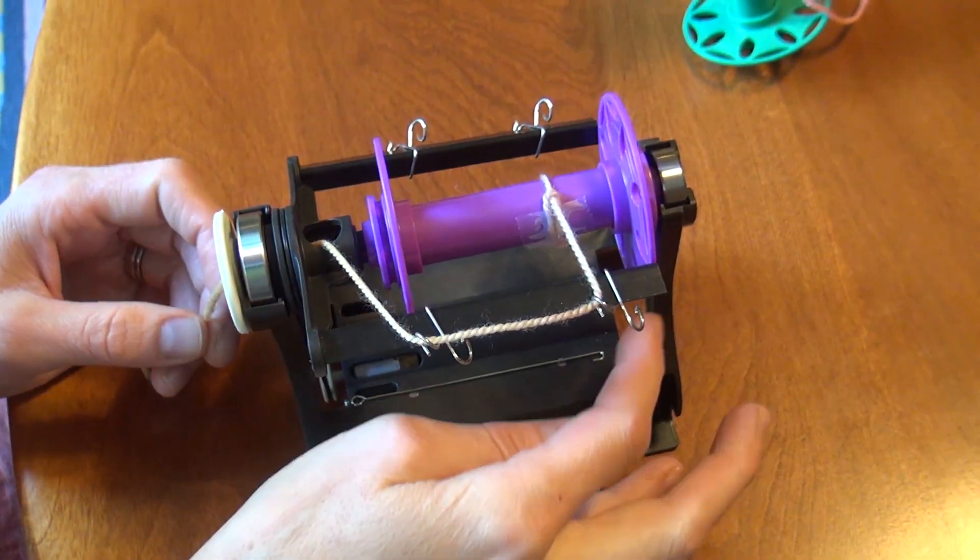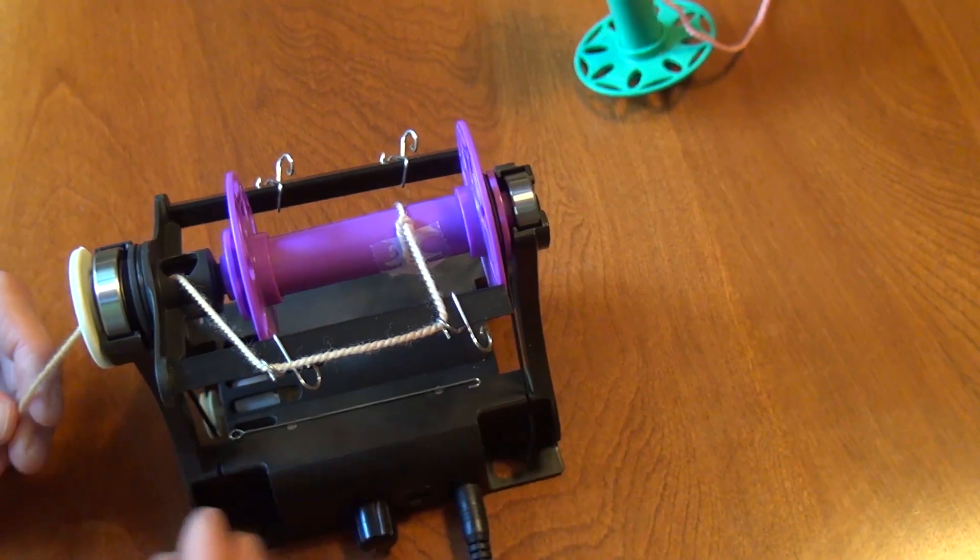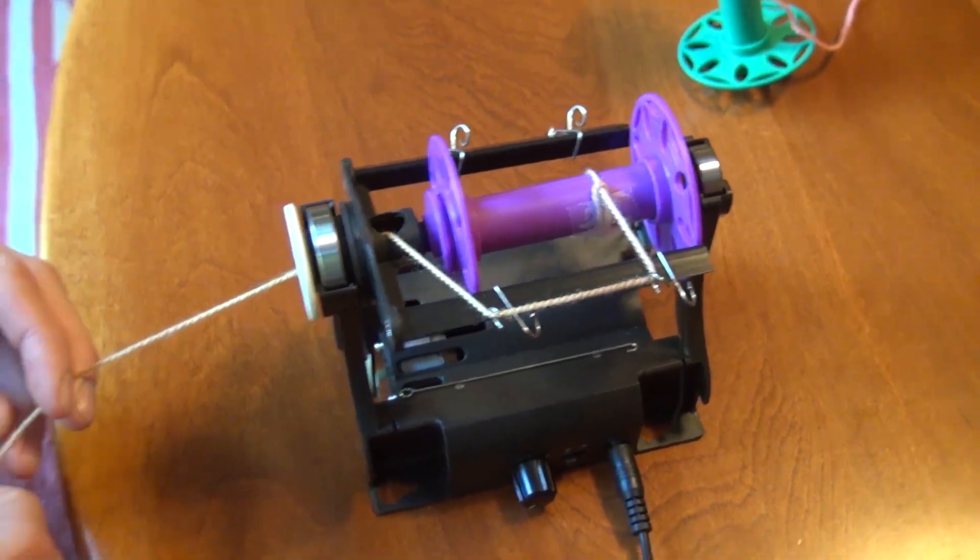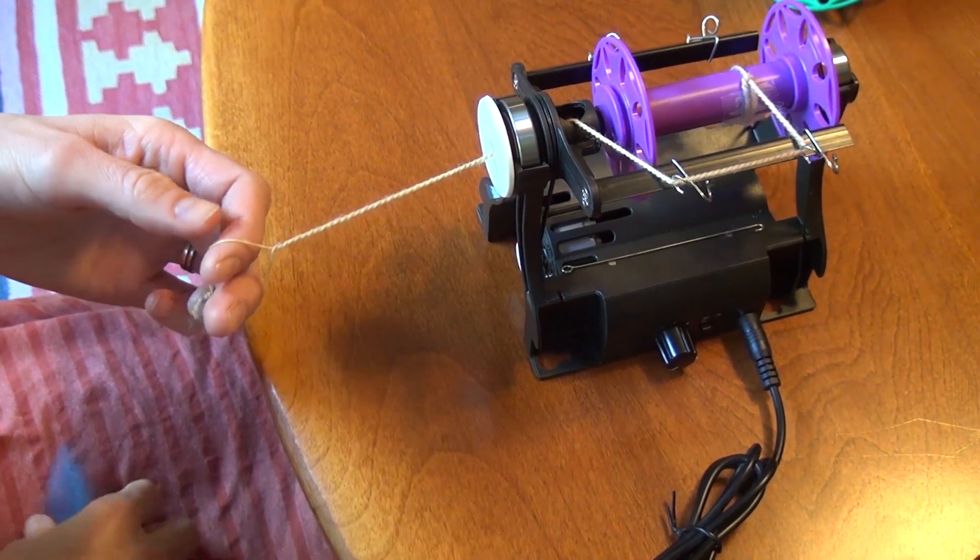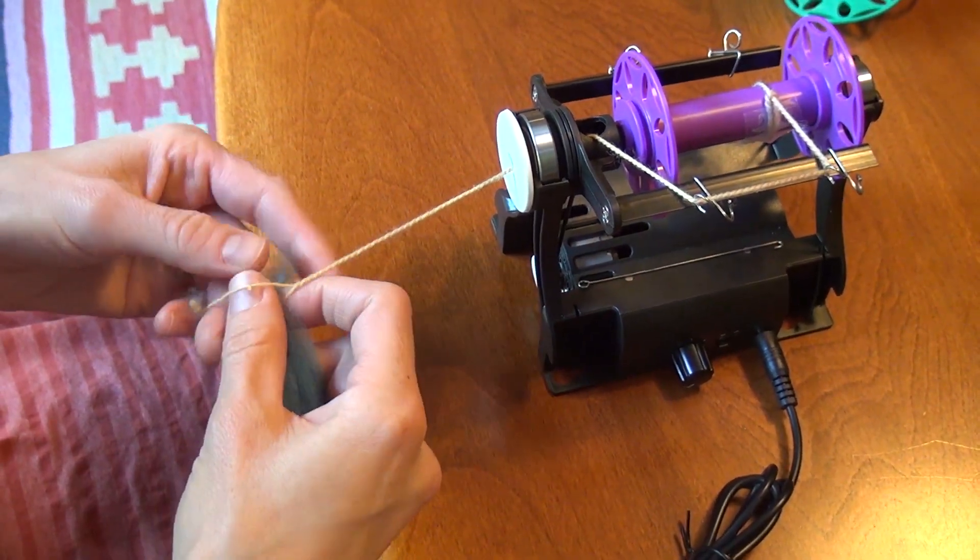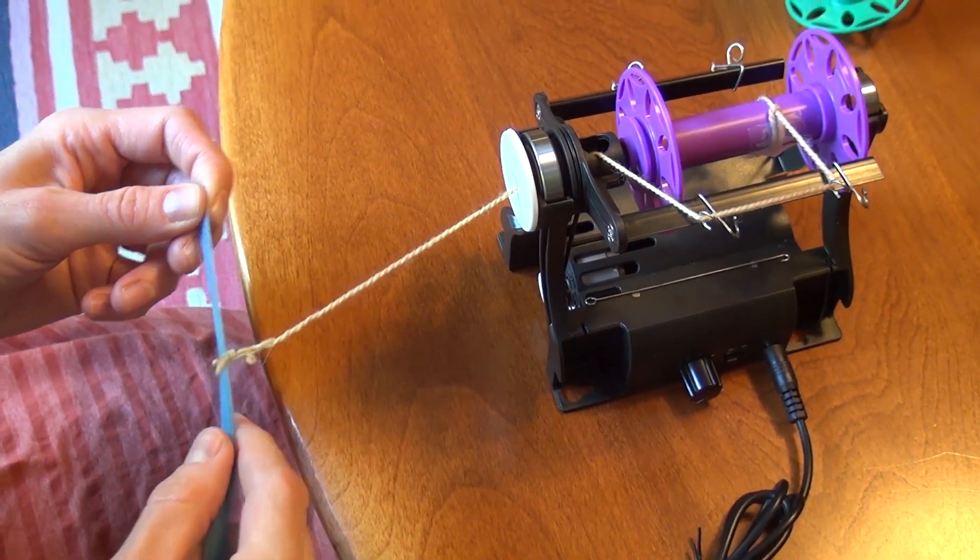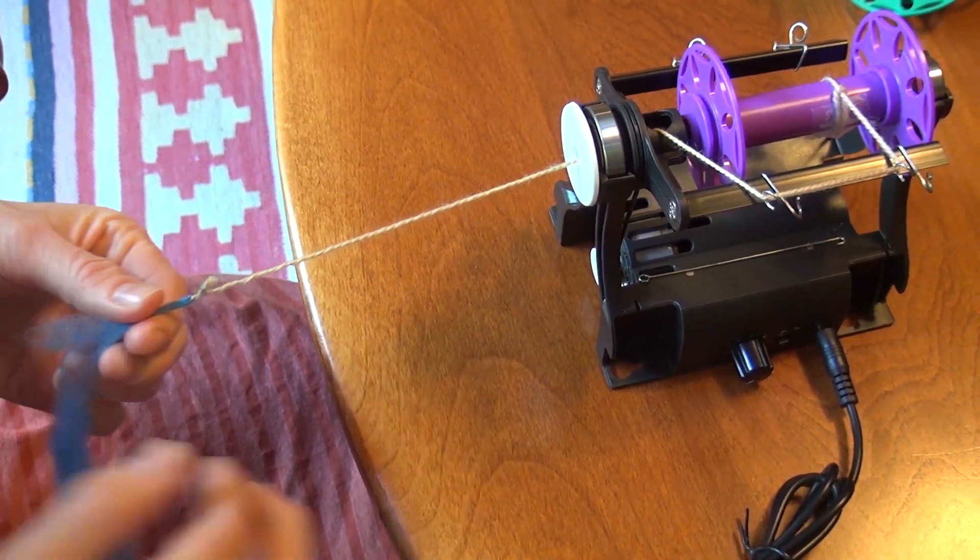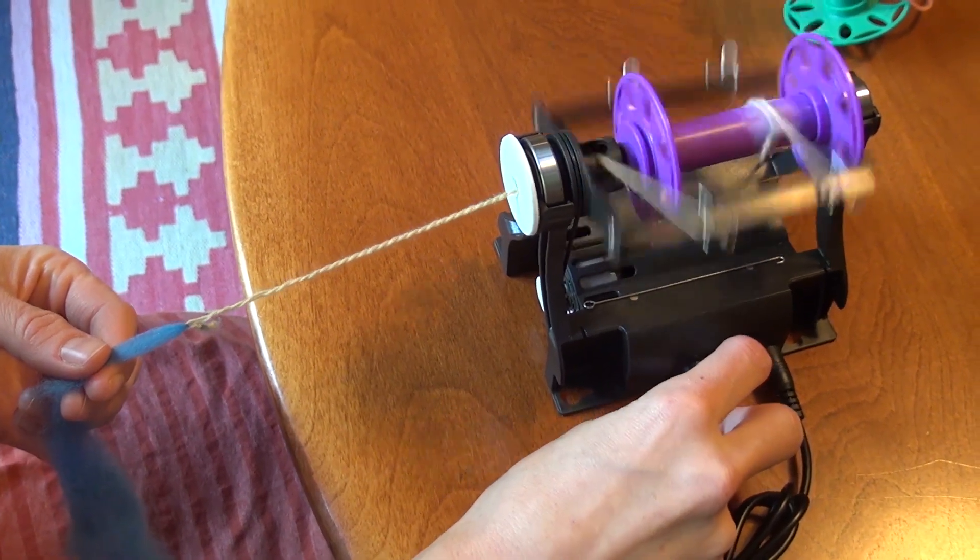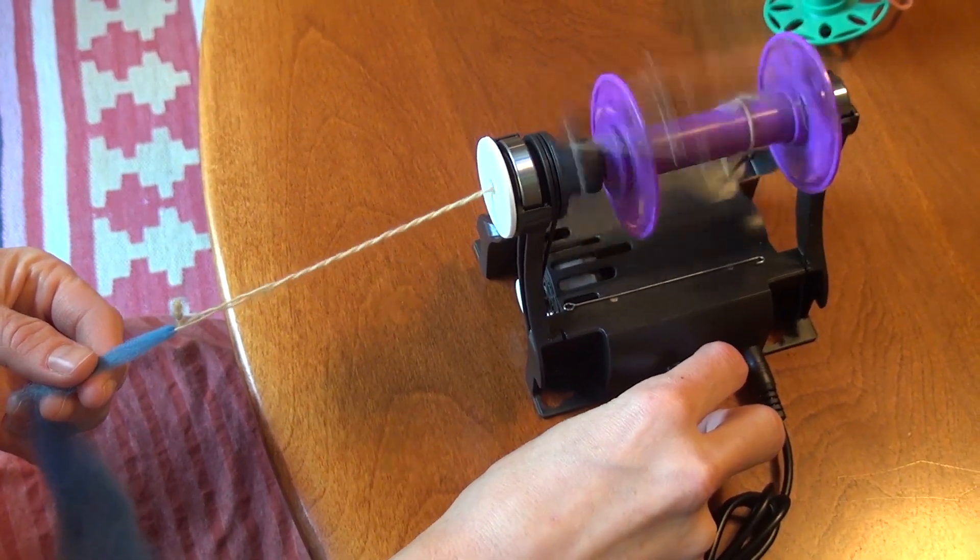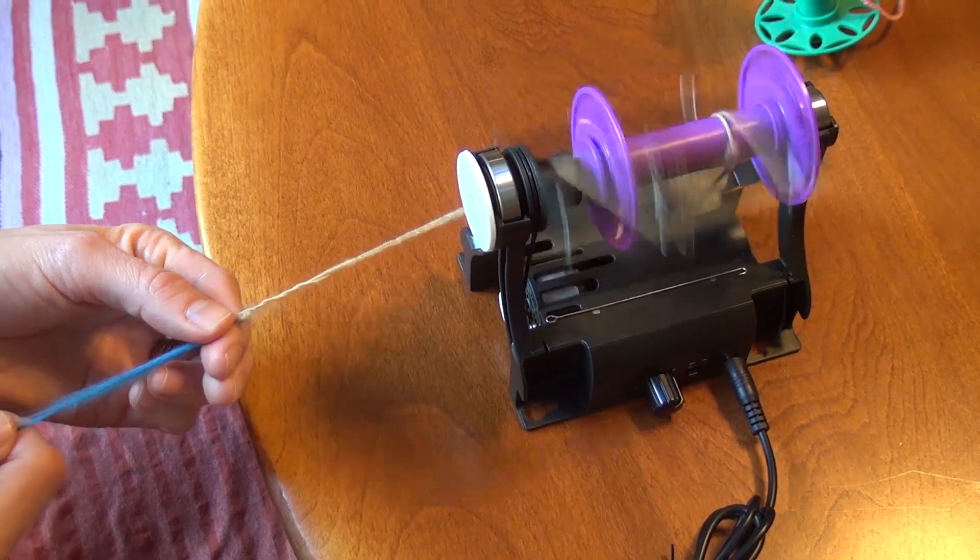Check that the tension is fairly light. Now attach your single to the lead yarn and turn the speed control to a slow speed to start spinning. You'll want to keep the speed low while learning to spin.